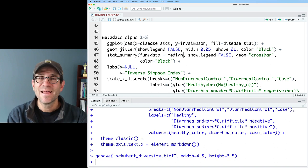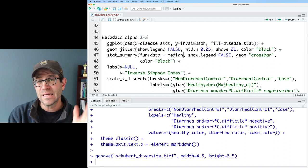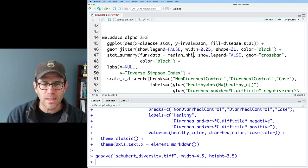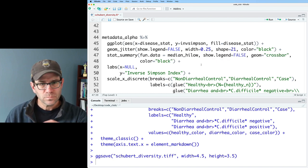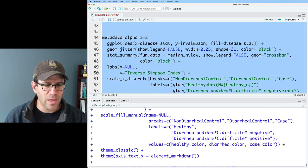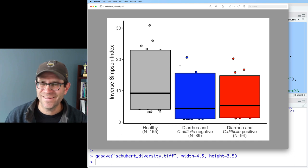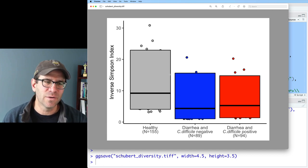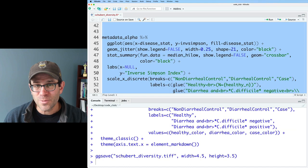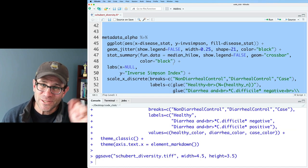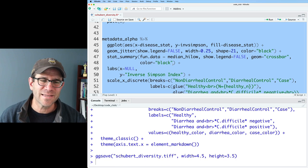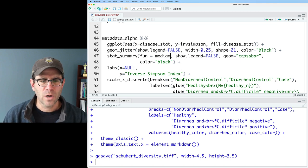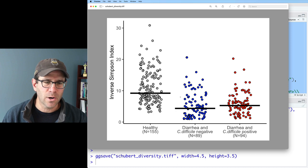To show you where things are going in the next episode, if I did fun.data instead of fun, so fun is a function that summarizes the data and only spits out one value, but if you do fun.data, it reports the y, y_min, and y_max. If I did median_hilow, then show legend geom crossbar, what we get is the body to the 95% confidence interval of the distribution of the inverse Simpson index. Come back for the next episode and be sure you're subscribed.